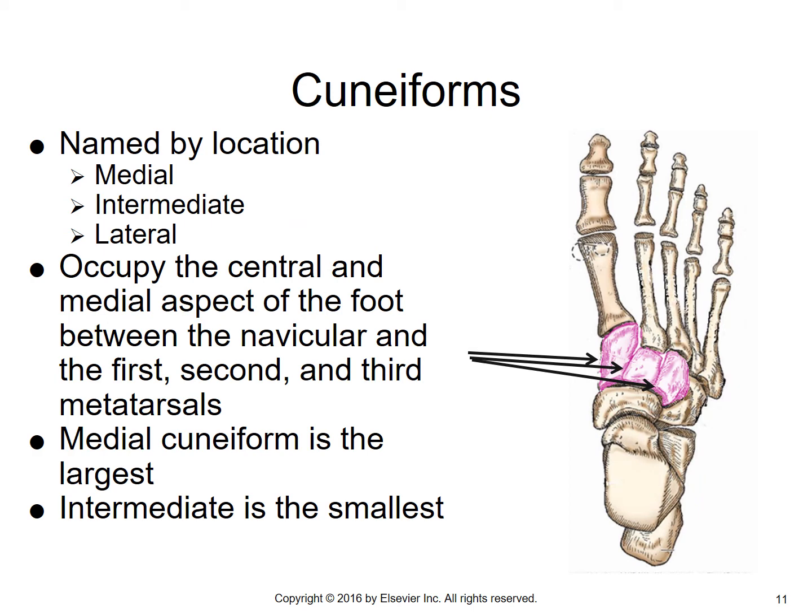Then we get to our three cuneiforms. They're named by location: the medial cuneiform is the first, the intermediate is the second, and the lateral cuneiform is the third. The medial cuneiform is the largest of them, and the intermediate is actually the smallest.